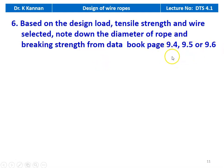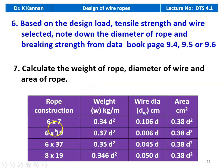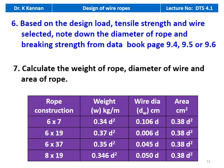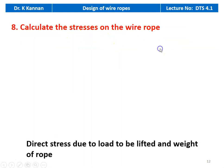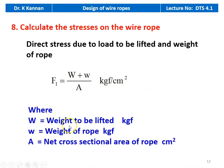Based on the design load, tensile strength, and wire selected, note down the diameter of the rope and the breaking strength from the data book pages 9.4, 9.5, and 9.6. Then calculate the weight of the rope, diameter of the wire, and the area of the rope based on rope construction: weight = 0.4 × d², wire diameter = 0.106 × d, and area = 0.38 × d². Using these formulae, or referring to the data book, calculate the weight, area, and diameter of the wire.